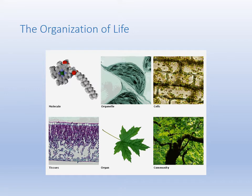Life is organized. You can see cells in the upper right-hand corner — that is the smallest form of life. Organelles are little cell parts; molecules make up organelles, but cells are where you cross that threshold from non-living to living. Groups of cells working together are tissues, raising the complexity. Tissues working together make organs, raising it further. Organs together make an organism, and then organisms interacting with each other make populations, communities, and so on.